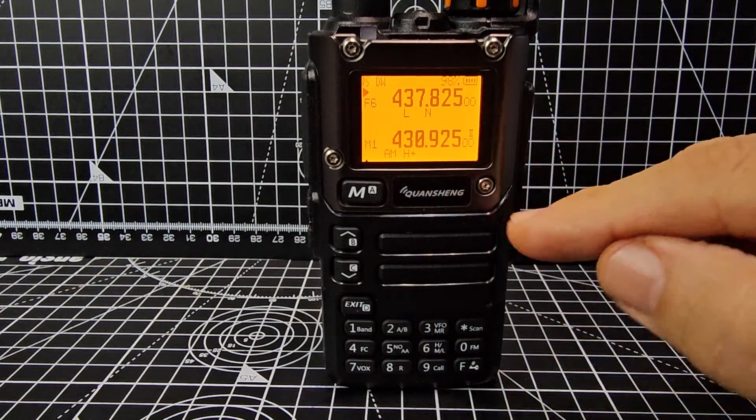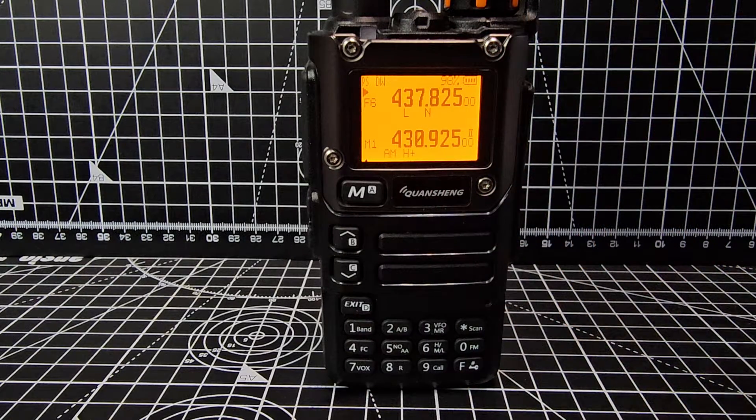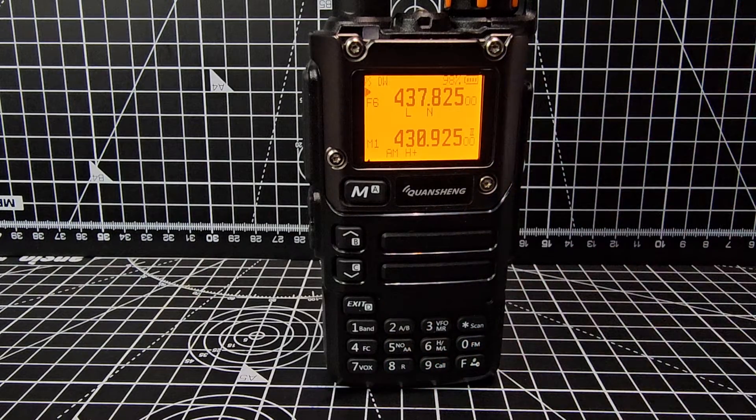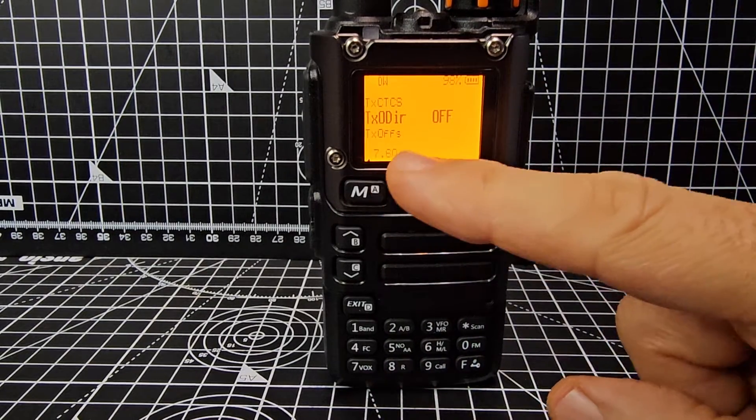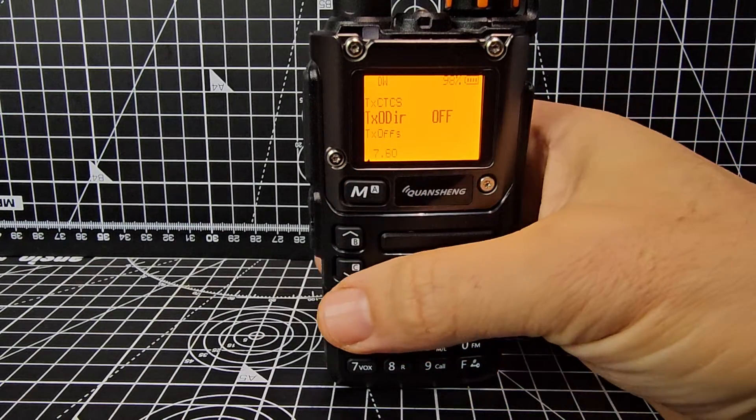But you need to work out with your maths the shift. So you can do this in VFO mode. And then you would go, because you can change the shift on these radios. You've got shift direction on menu 7. Remember, the numbers, the first number is the menu number.